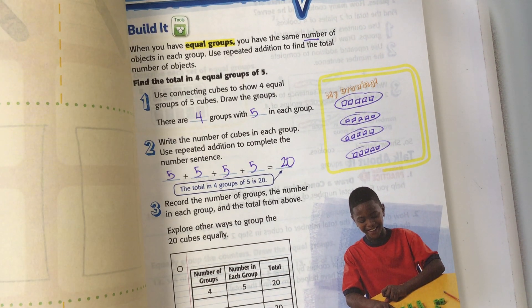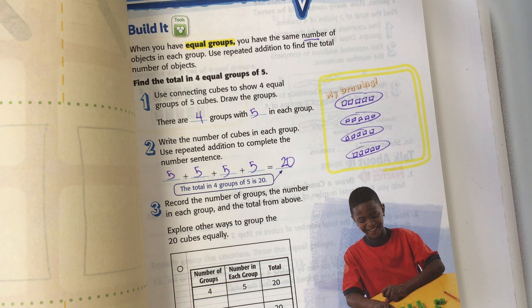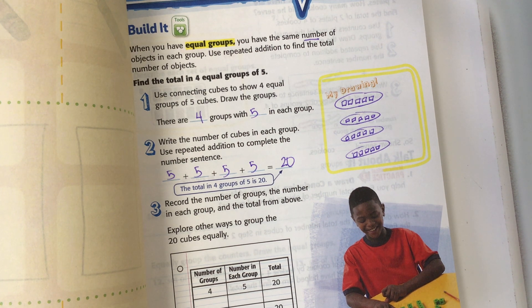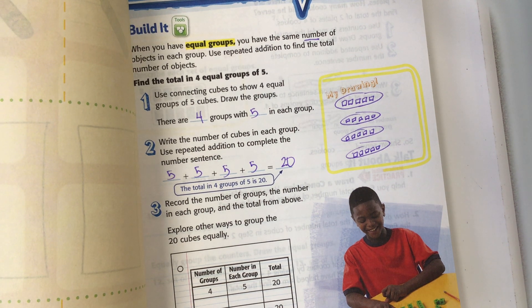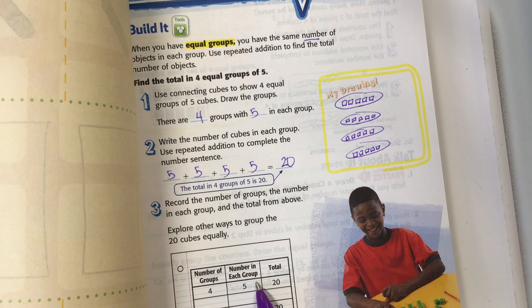Record the number of groups, the number in each group, and the total from above. Explore other ways to group the 20 cubes equally. Number of groups is four, number in each group is five, and the total is 20.